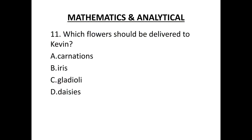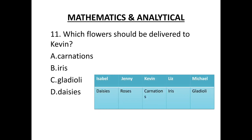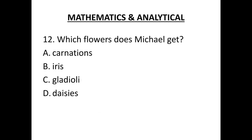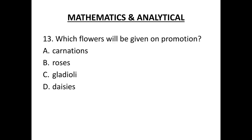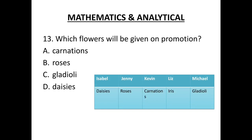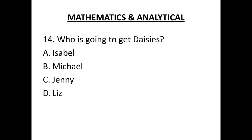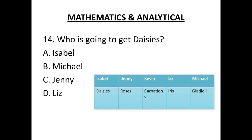Now, which flowers should be delivered to Kevin? Kevin gets carnations. Which flowers does Michael get? Michael is going to get gladioli. Which flowers will be given on promotion? Jenny was getting promoted. So, Jenny is going to get roses. Option B. Number 14. Who is going to get daisies? Isabel is going to get daisies.